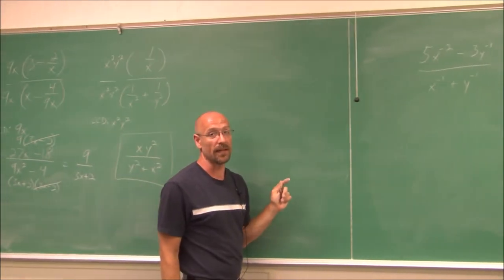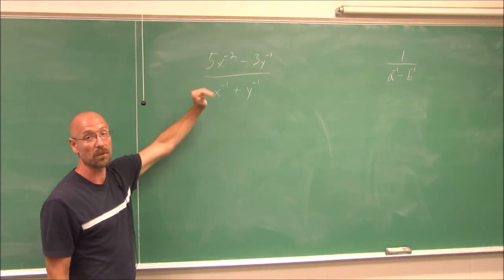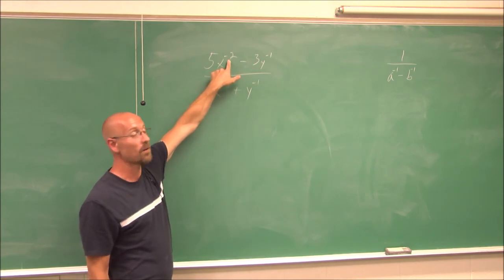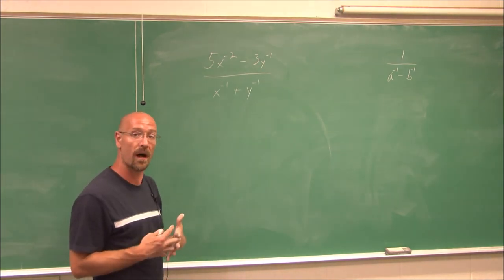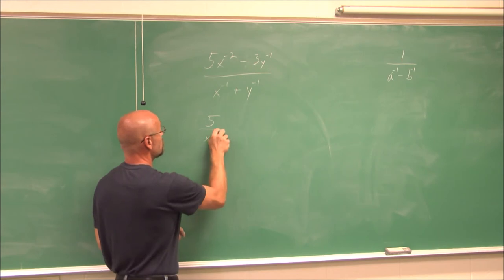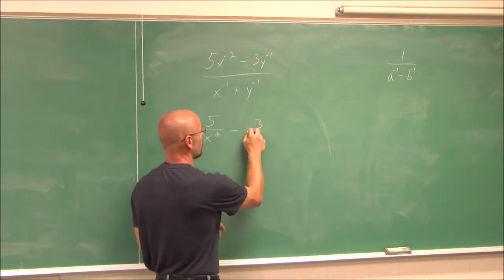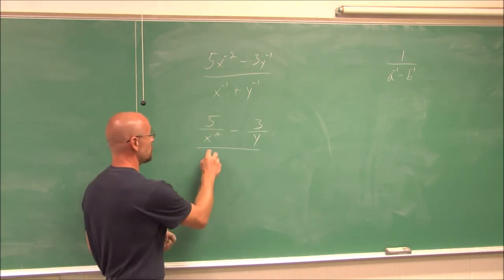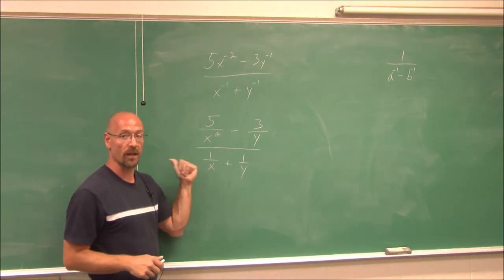Sometimes we'll deal with negative exponents. A negative exponent just means to take the reciprocal of that value raised to that power. So here I have 5 times x to the negative second — by the rules of exponents, the negative exponent only applies to the x. Any time I see a negative exponent, I rewrite it as positive by taking its reciprocal. So 5x⁻² becomes 5 over x², and minus 3 times y⁻¹ becomes minus 3 over y. In the denominator: x⁻¹ is 1/x, and y⁻¹ is 1/y.